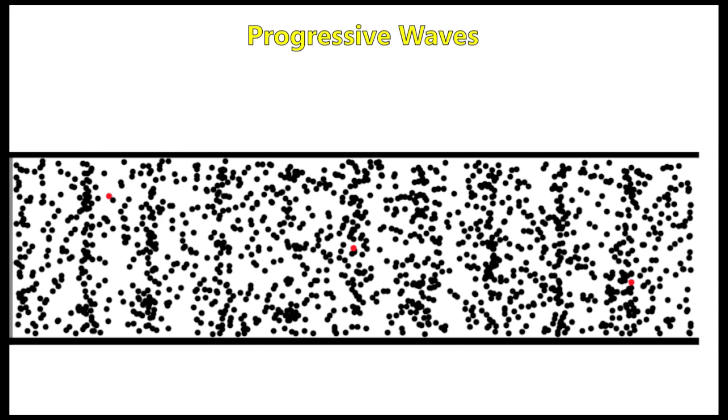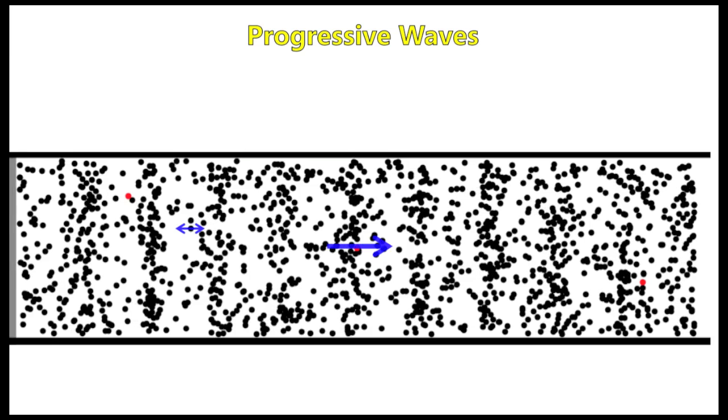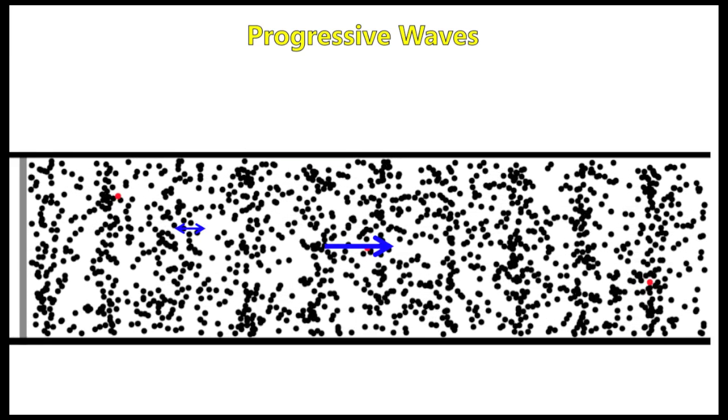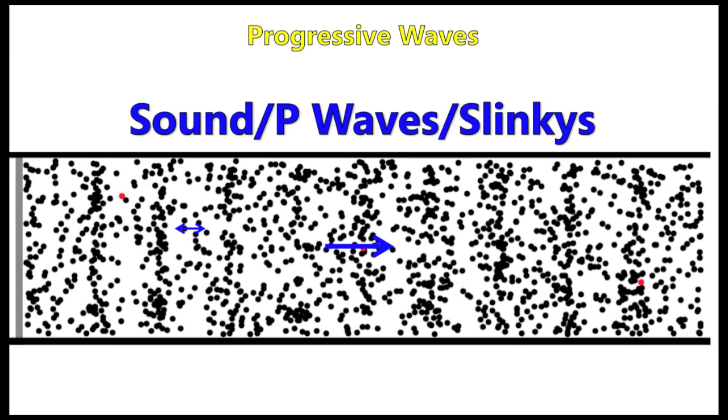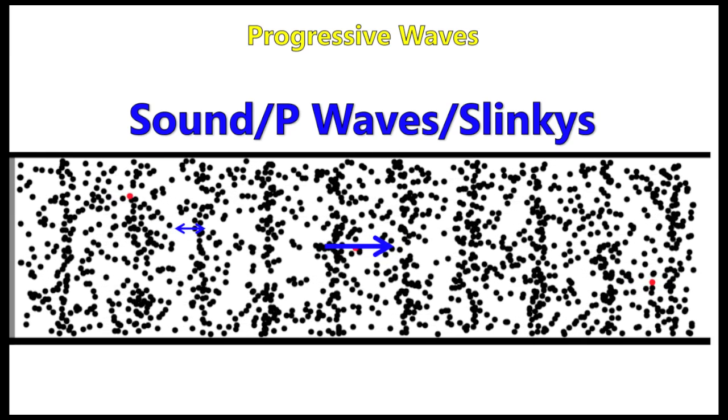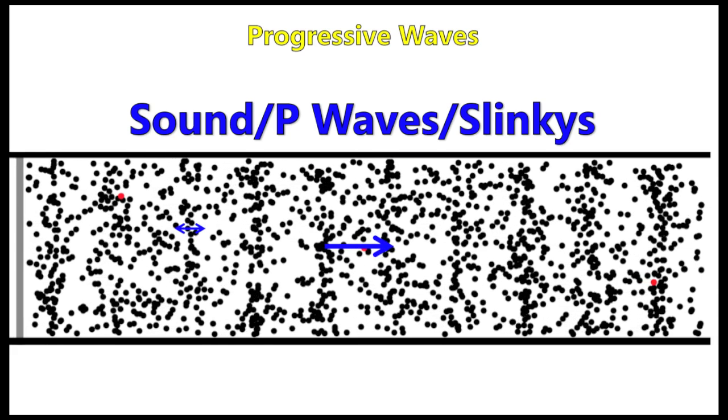Longitudinal and transverse. Longitudinal waves are waves in which the direction of vibration of the particles is parallel to the direction which the wave travels. Examples are sound, primary seismic waves, and slinkies. We love slinkies. This leaves you with compressions and rarefactions.